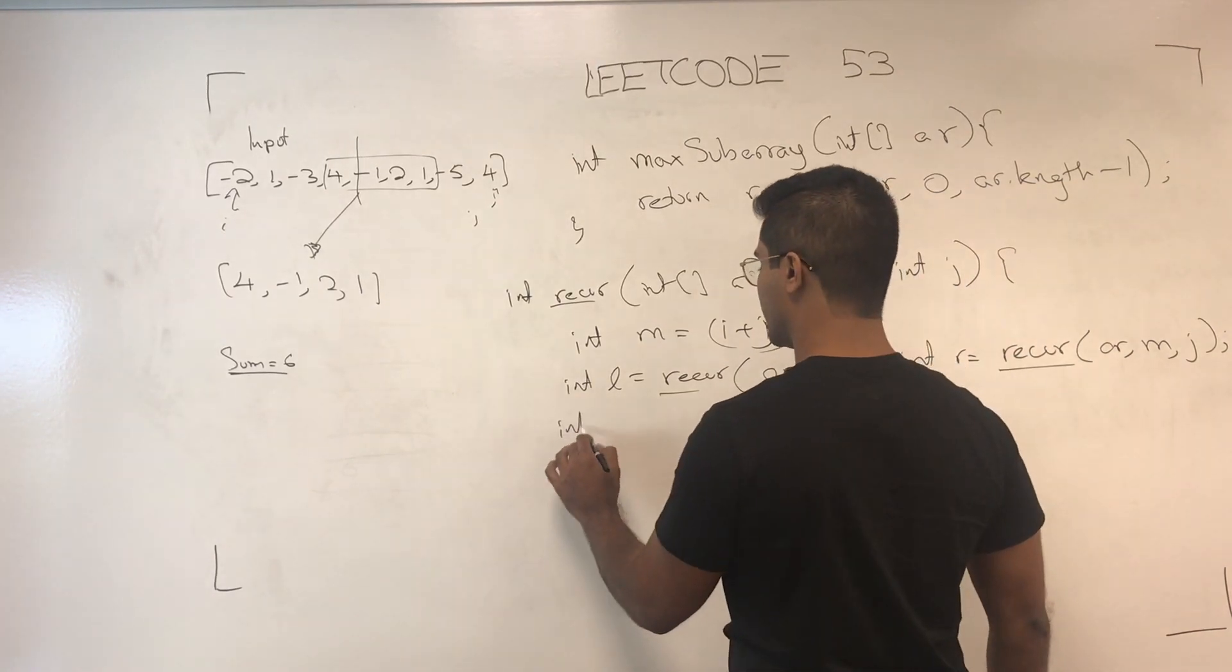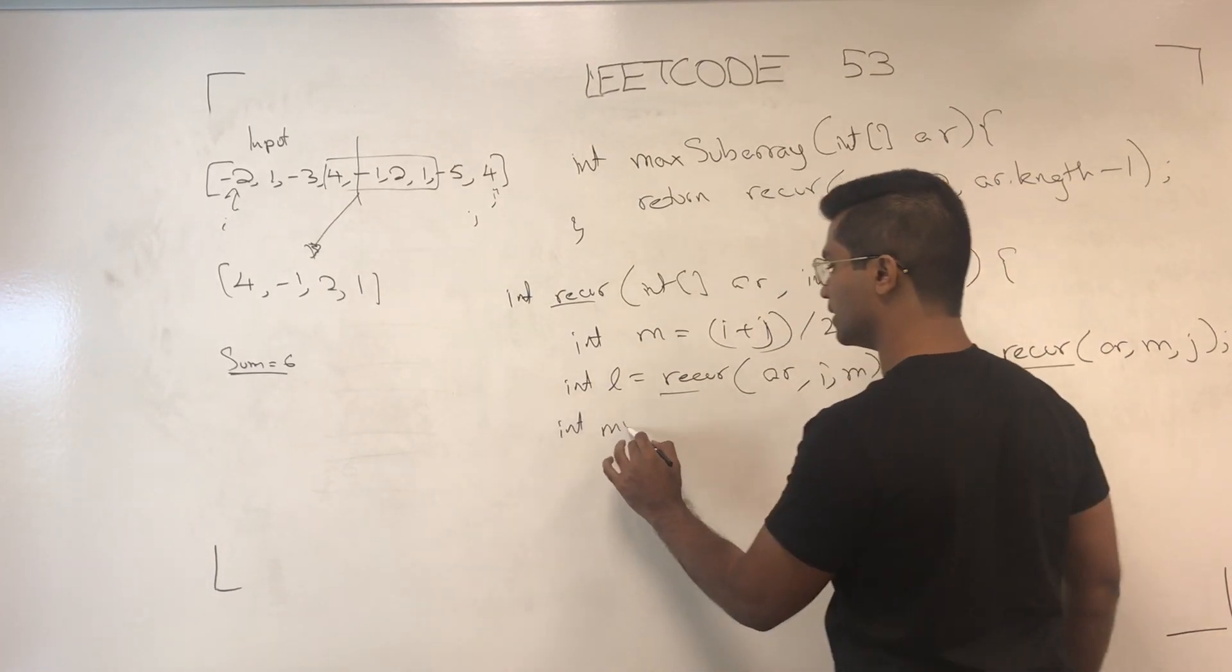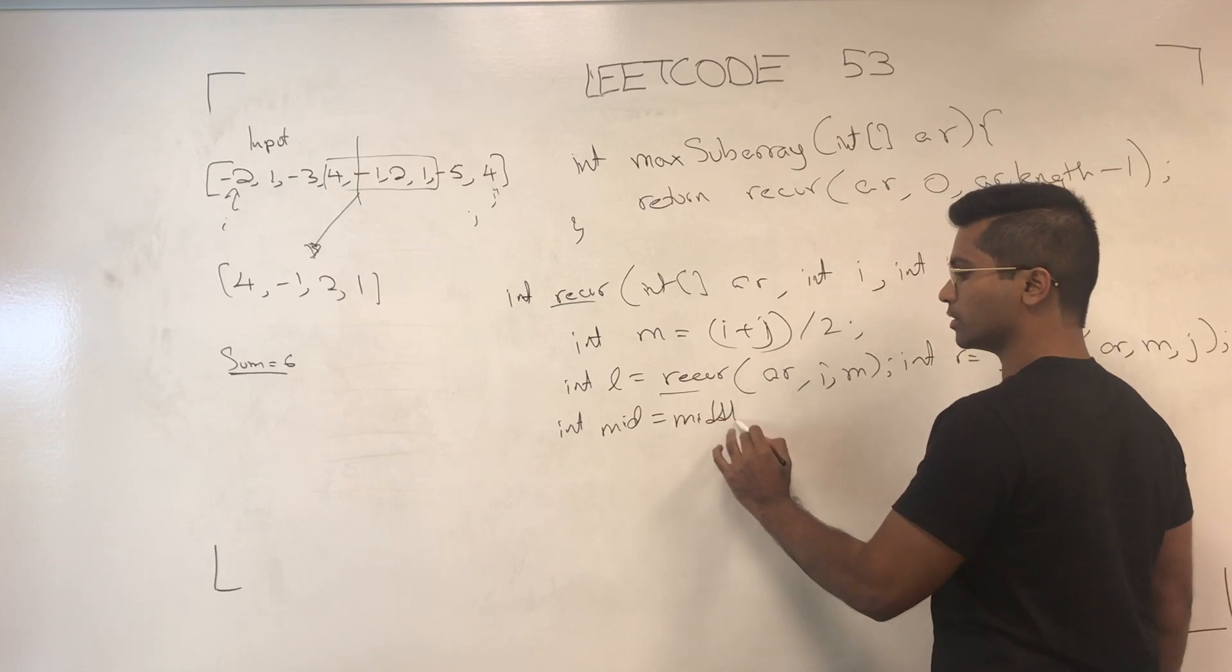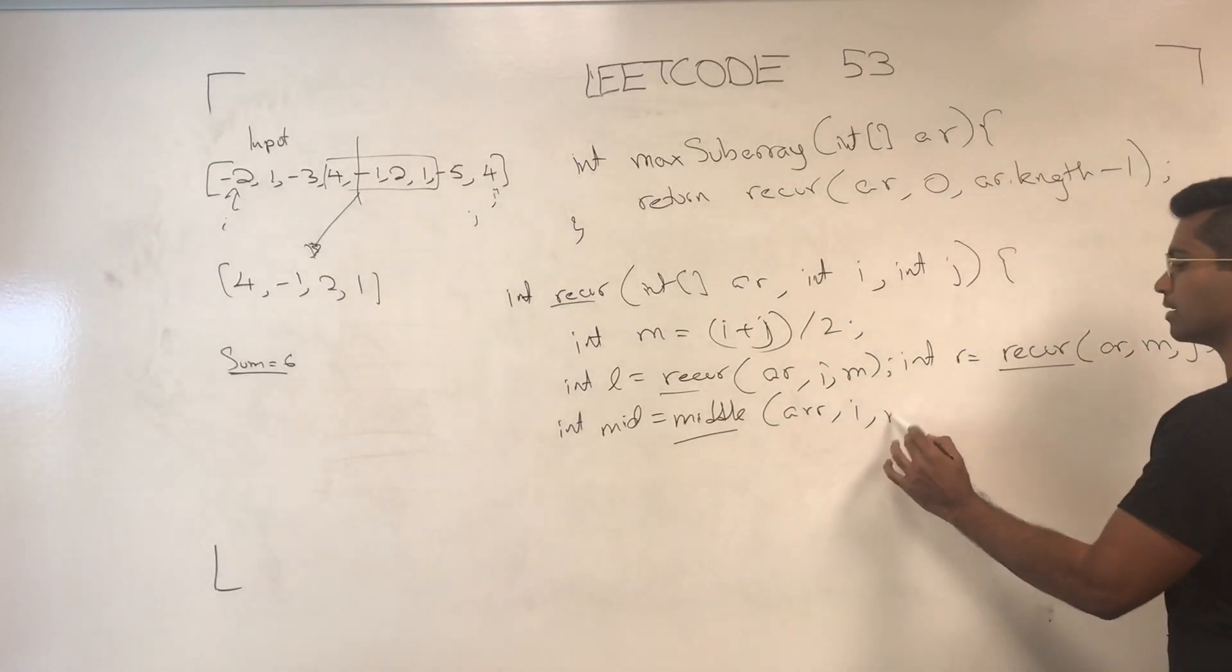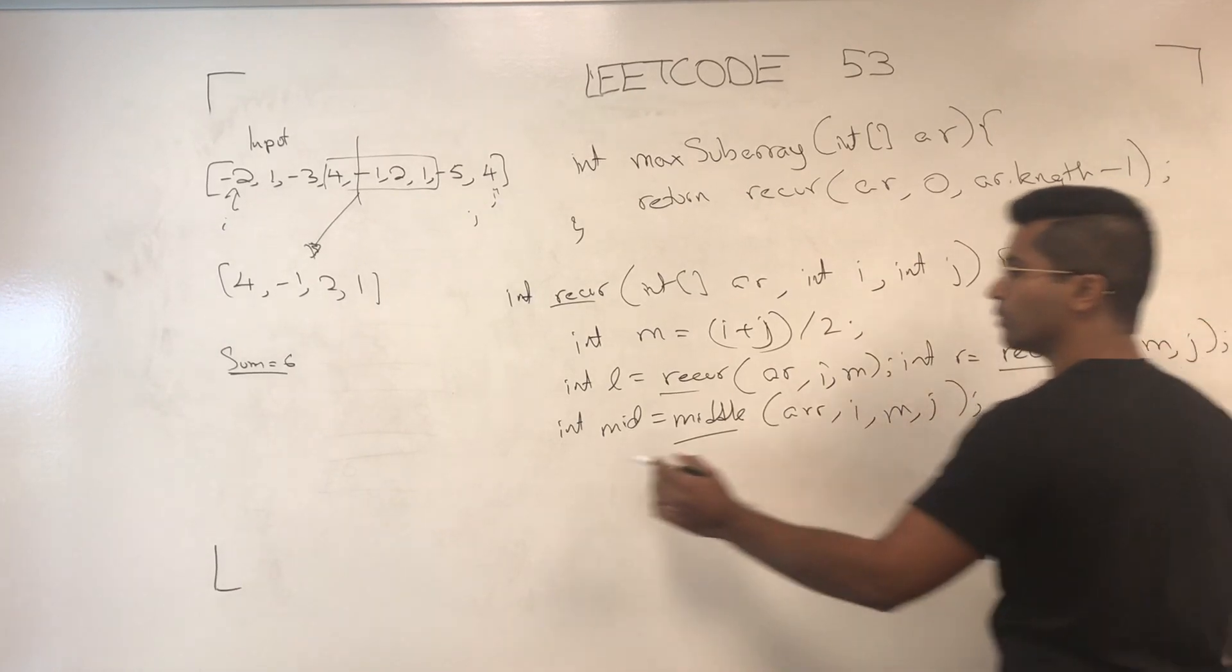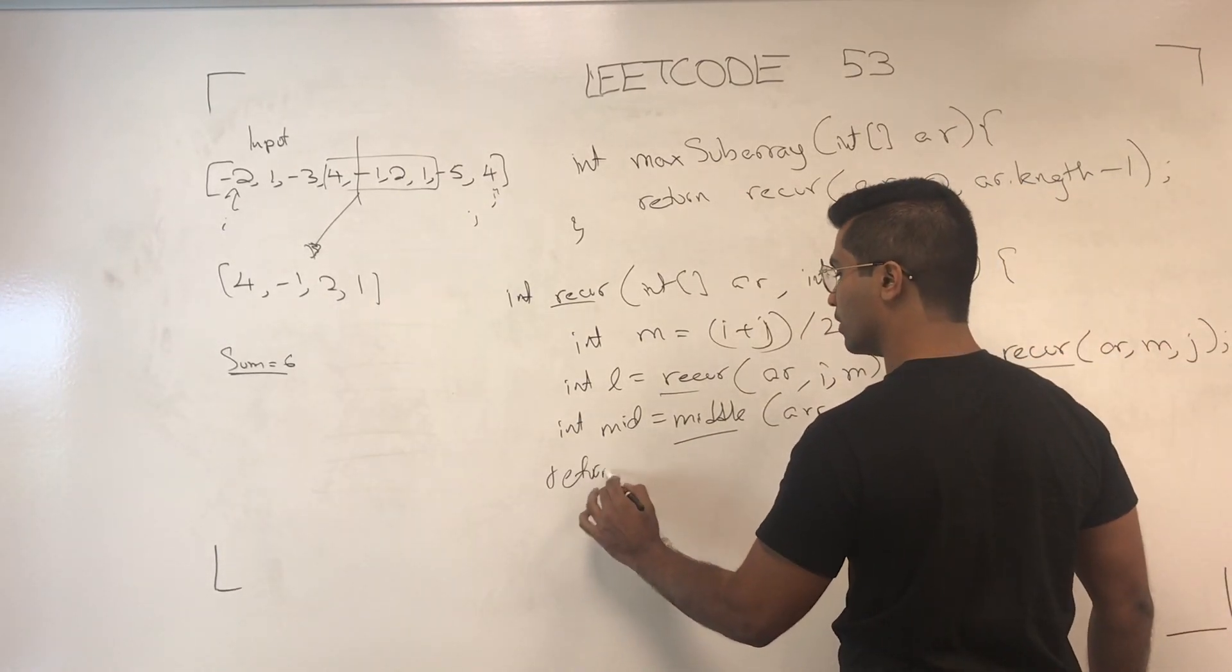Then, we get int mid, which is going to be a separate function we'll get into in just a sec, which is going to take the array i, m, and j, and then we return the maximum of all of that.